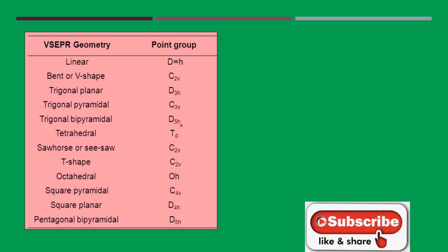Here is the consolidated summary: linear shape gives D∞H or C∞V depending on symmetry. Bent or V-shape is C2V. Trigonal planar is D3H. Trigonal pyramidal is C3V. Trigonal bipyramidal is D3H. Tetrahedral is Td. Seesaw is C2V. T-shape is C2V. Octahedral is Oh. Square pyramidal is C4V. Square planar is D4H. Pentagonal bipyramidal is D5H. Pentagonal pyramidal is C5V. You have to remember these.